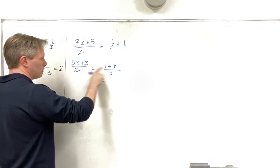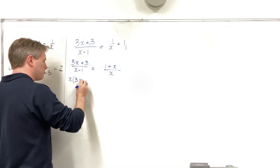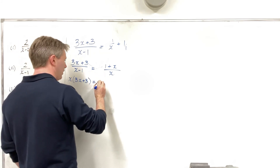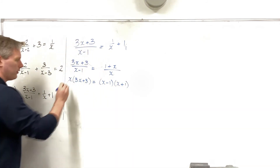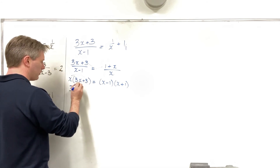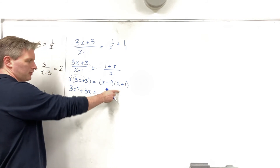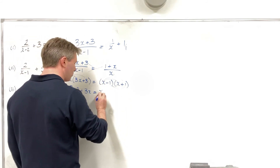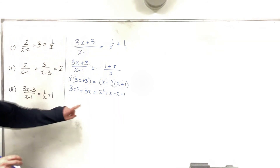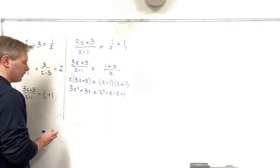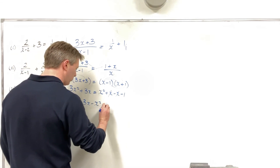I now have two separate fractions equal to each other, so I can cross multiply. That gives me x times 3x plus 3 equal to x minus 1 times x plus 1. Distributing the left side: 3x squared plus 3x. On the right, I notice this is the difference of two squares — FOIL gives x squared plus x minus x minus 1, and the plus x and minus x cancel. Bringing everything to the left: 3x squared plus 3x minus x squared plus 1 equals 0.